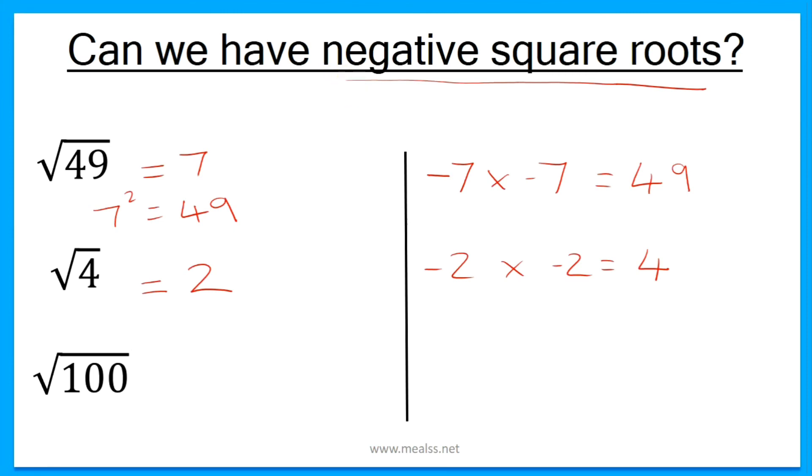So unless it says in the question, find the negative square root of, let's say for example, 100, then you could say it's minus 10, because minus 10 squared equals 100.